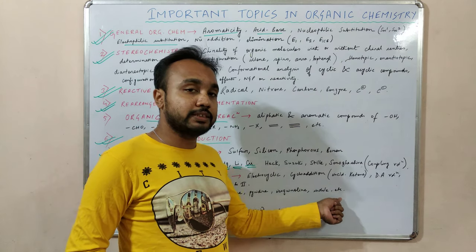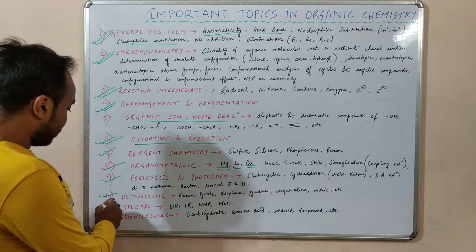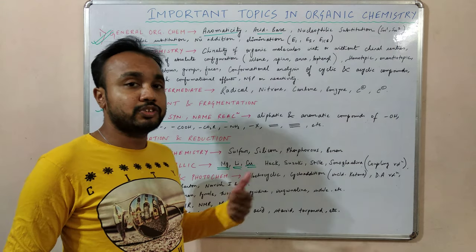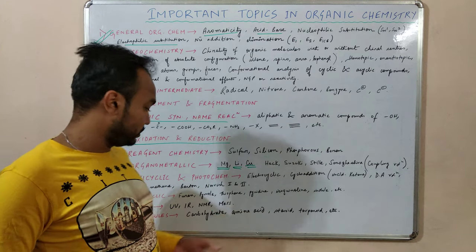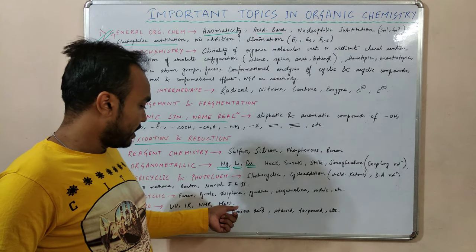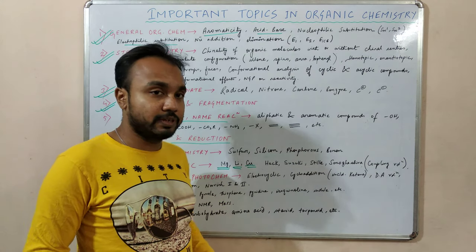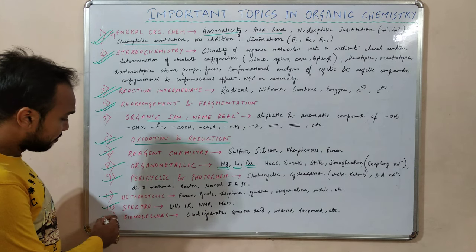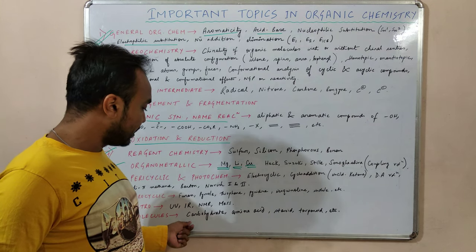In heterocyclic chemistry we will mainly focus on furan, pyrrole, thiophene, pyridine, isoquinoline, indole, etc. Then spectroscopy — we will learn how to determine structure using IR, NMR, and mass spectrometry, as well as UV spectroscopy, and we will learn molecular fragmentation patterns in mass spectrometry.